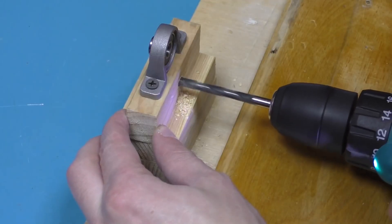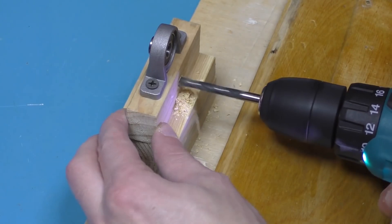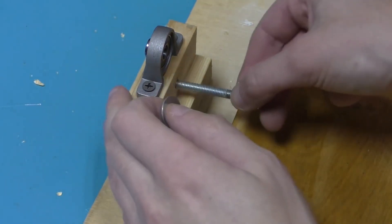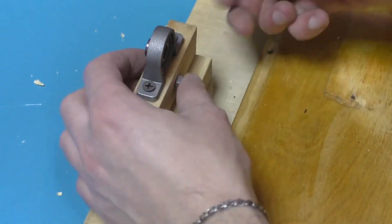Drill a 0.236 inches hole in the wooden piece under the support bearing. Insert the bolt into the hole and tighten it with a nut.